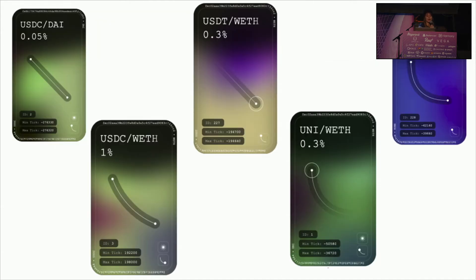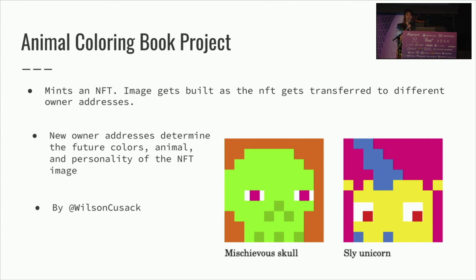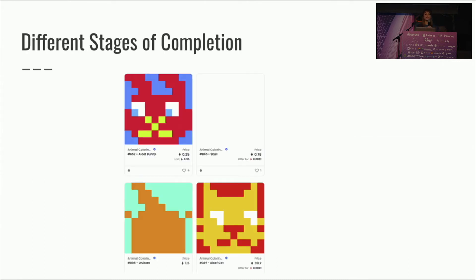Another project I want to talk about is Animal Coloring Book. Wilson works on NFT projects where the image changes depending on how you interact with it on-chain. In this project, an image gets built as the NFT gets transferred to different owner addresses, and the new owner addresses determine the future colors and personality of the images. When you first mint, it's a blank slate, but as you transfer it to different addresses, the first four transfer addresses get saved in storage, and later when we extract the image, it looks at those addresses and uses the hex strings to determine colors.